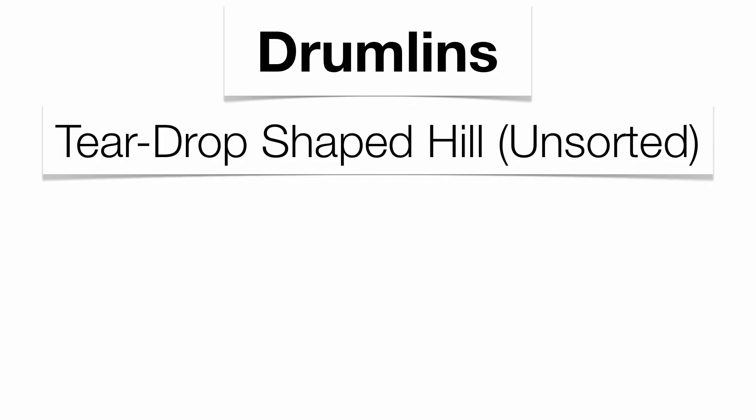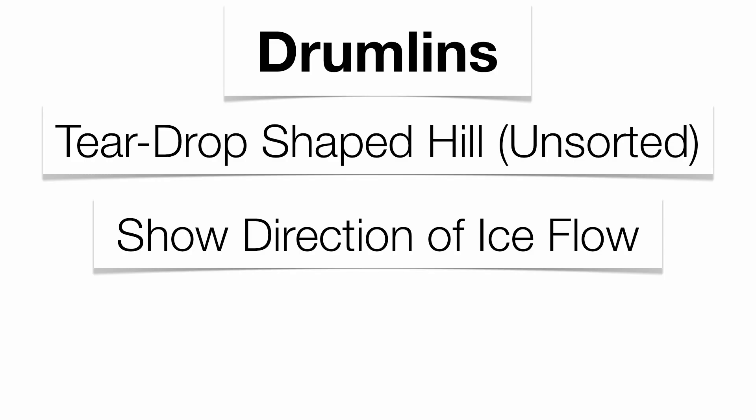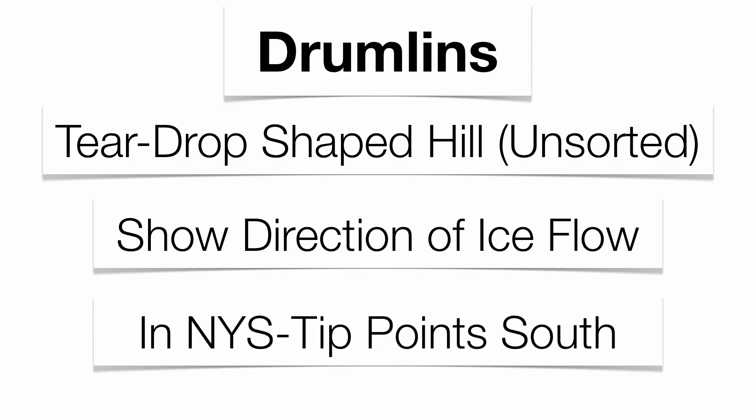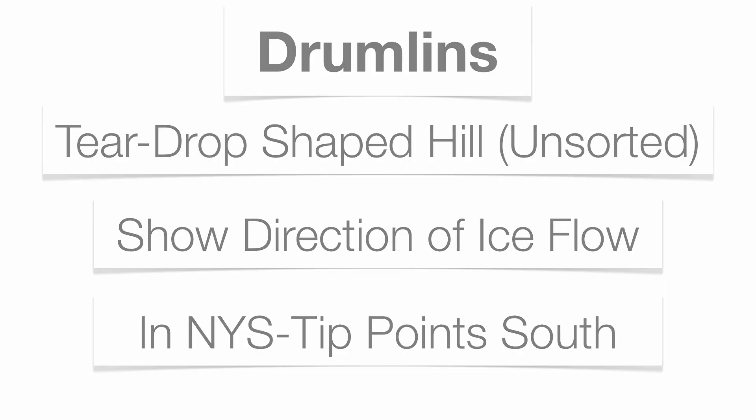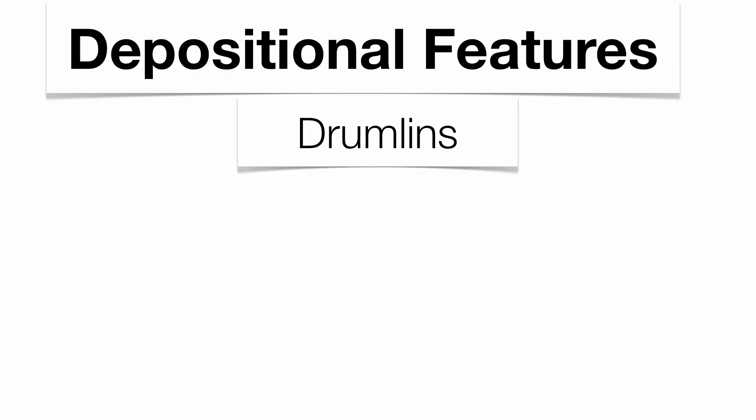Sometimes those glaciers can produce hills as well during their deposition. Some of these hills of unsorted sediment are what we call drumlins. They're somewhat teardrop-shaped in nature. The great thing about drumlins is they also show the direction of ice flow. In New York State, the tip of the drumlin points south. Here's an actual drumlin from up above and also a profile.